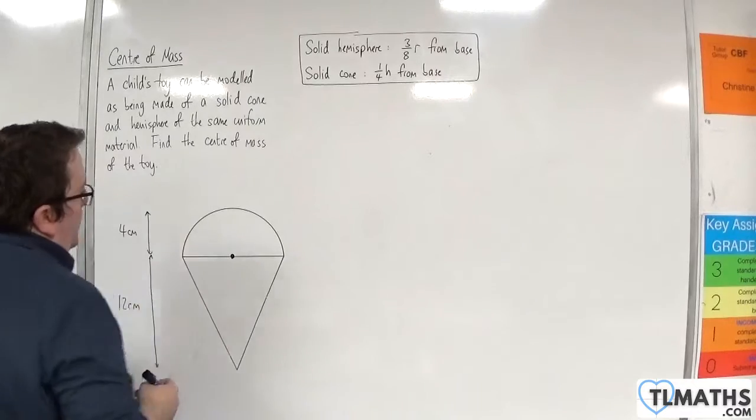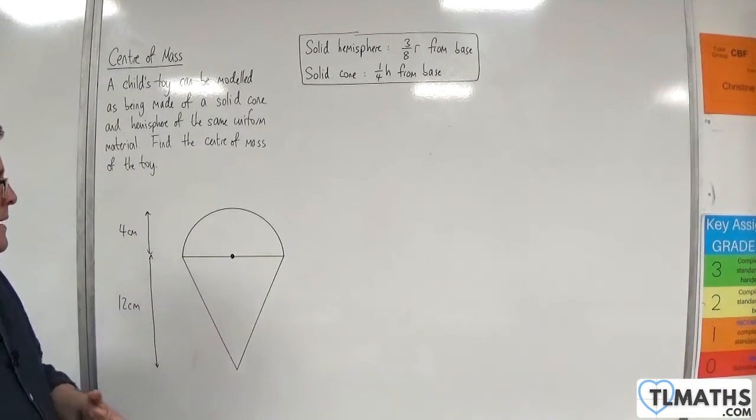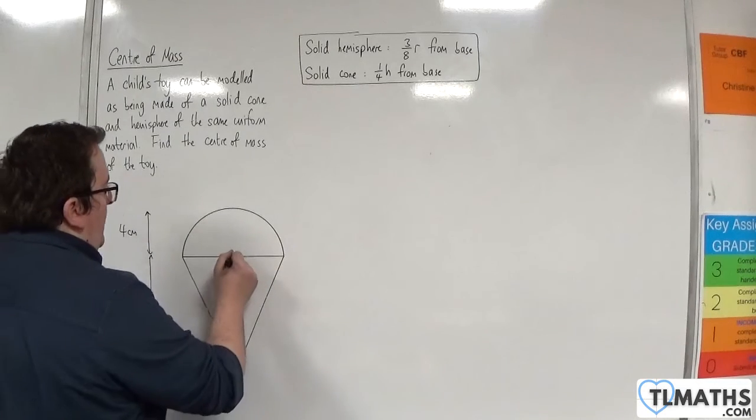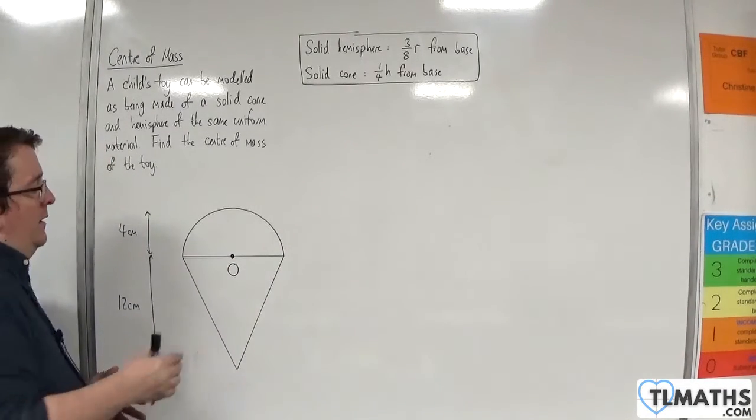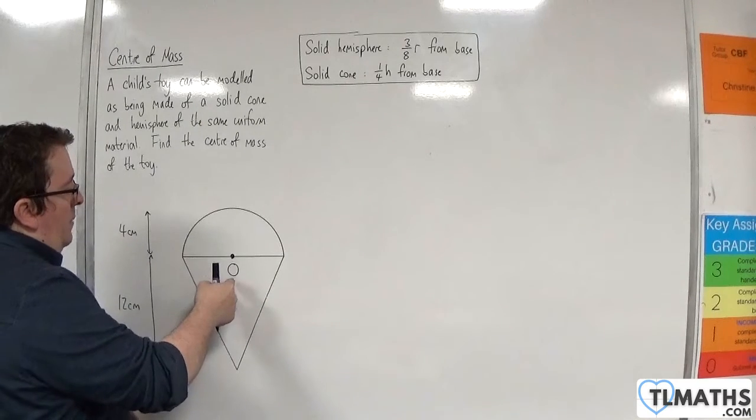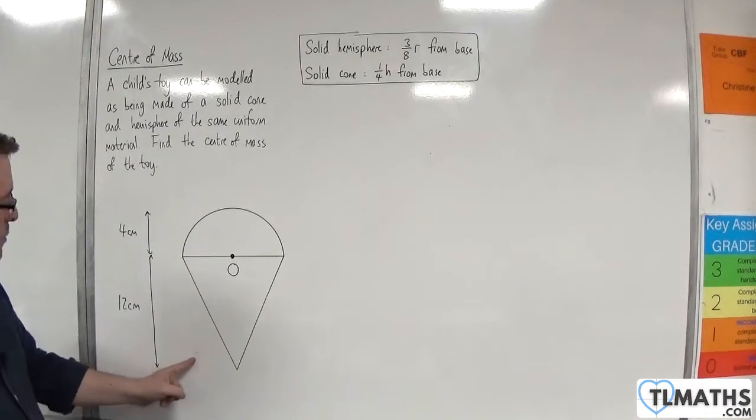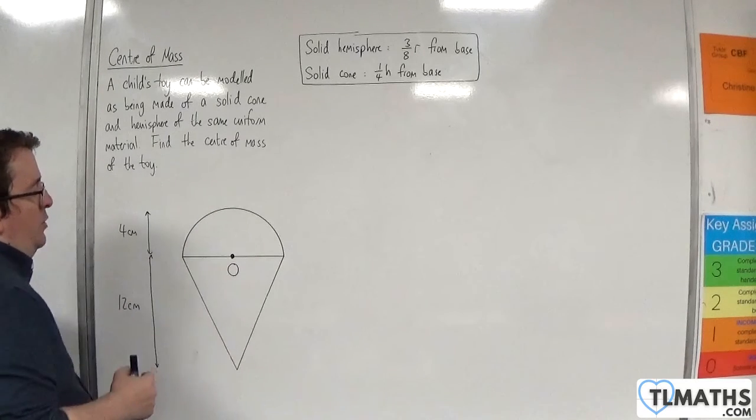OK, so before we begin, we should decide where our origin is going to be. Now, to make the calculations easier, it probably makes sense to have the origin as that point there, and so we can go up and below it. That seems like a reasonable place to put it. You could put it down here if you wanted to. It doesn't really matter, but I'm going to position it there.